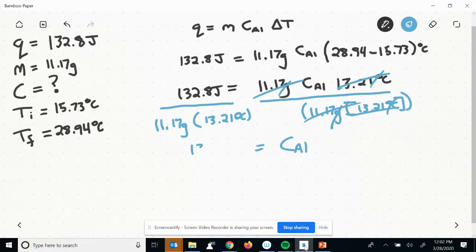What I'm left with is the specific heat of aluminum is equal to 132.8 joules divided by 11.17 grams times 13.21 degrees Celsius. Now, how you plug that into your calculator matters. And so listen closely. I know you can't see my calculator. I'm going to say 132.8 divided by 11.17 and hit divide again.